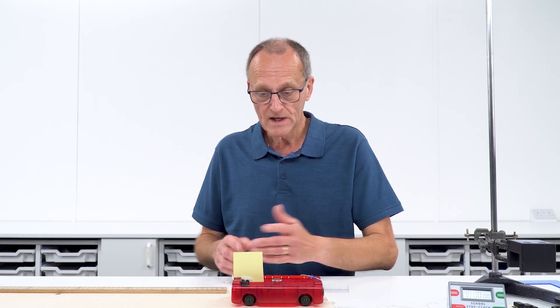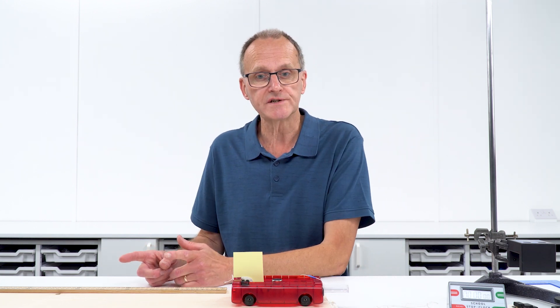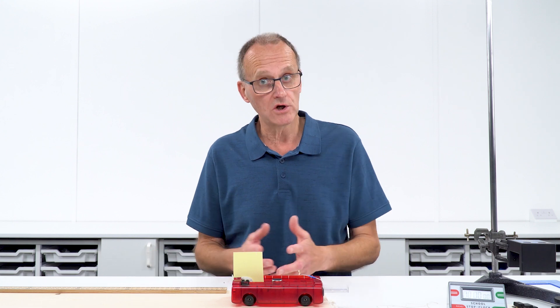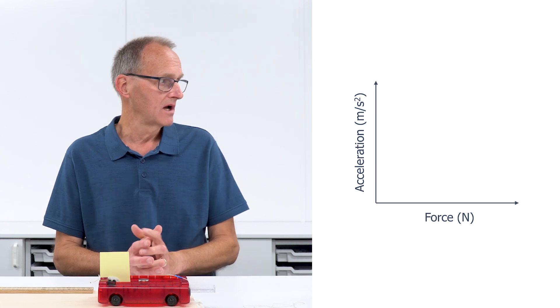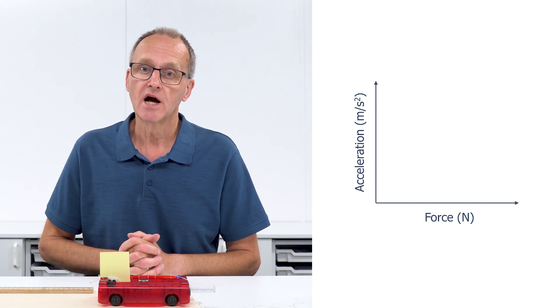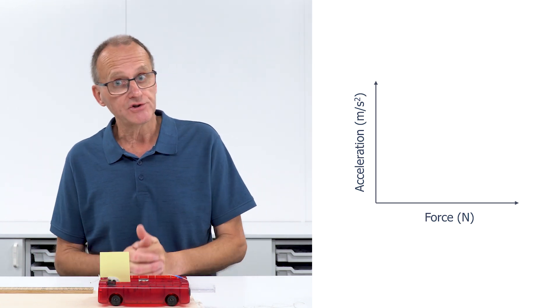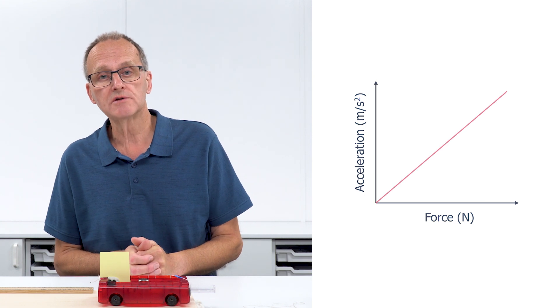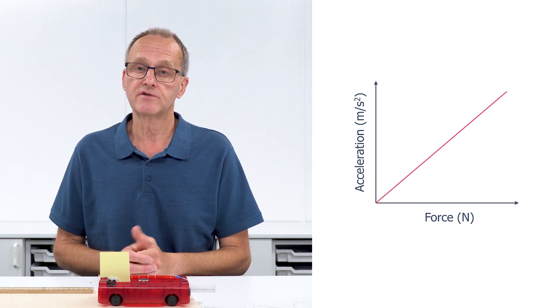To test this relationship we'll accelerate our trolley with different forces, record the force and the acceleration, and then plot a graph of acceleration against force. If the two are proportional then we should get a straight line through the origin.